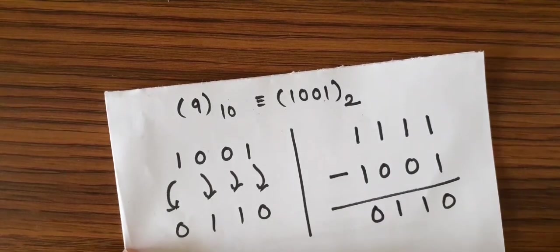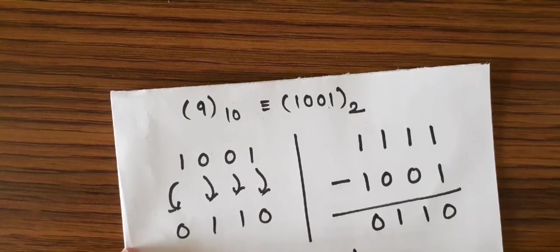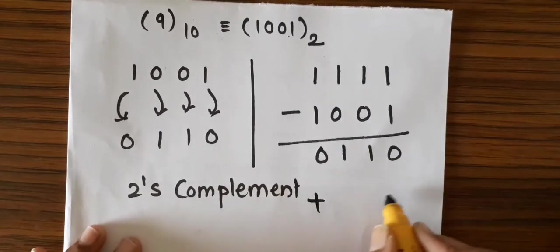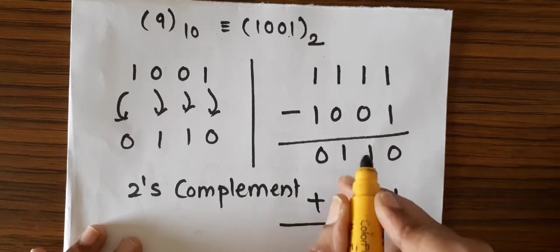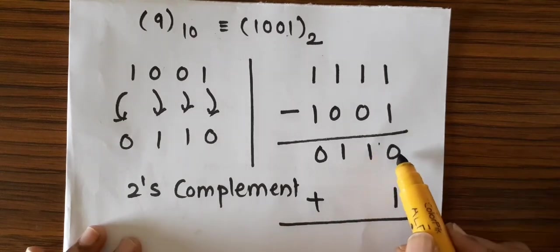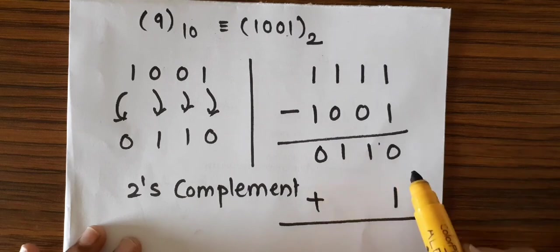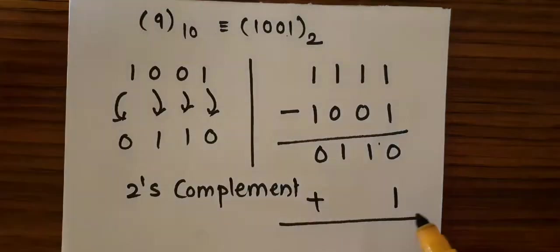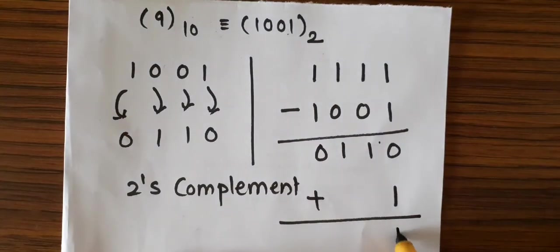Then coming to 2's complement. 2's complement can be obtained by simply adding 1 to the 1's complement of a number. So this is the 1's complement of the number: 0110. Adding 1 to it will provide us the 2's complement. So 1 plus 0110.